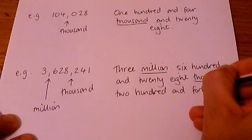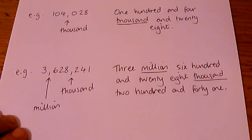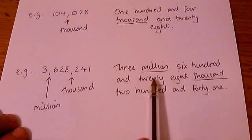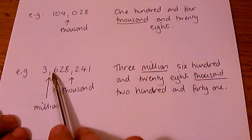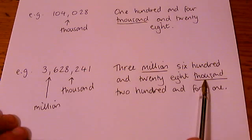Okay, so just notice that I've underlined these two words here. The first comma represents million. The second comma represents the word thousand.